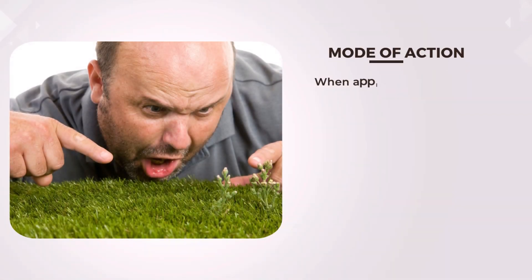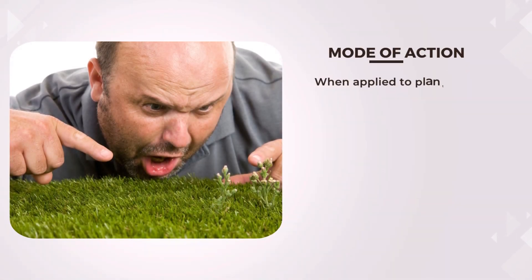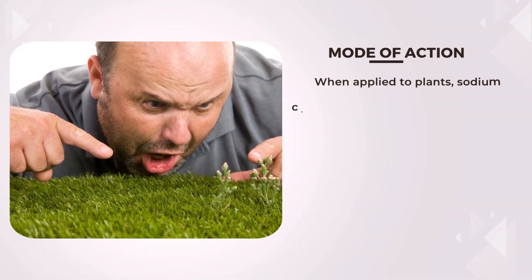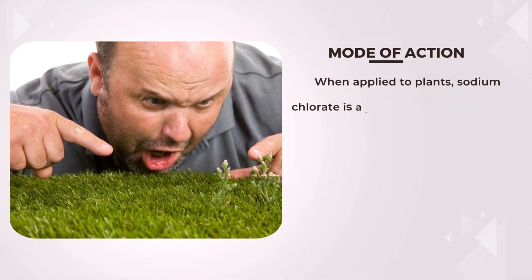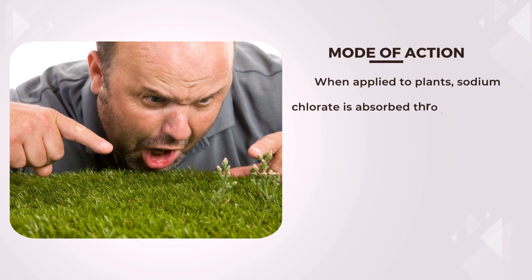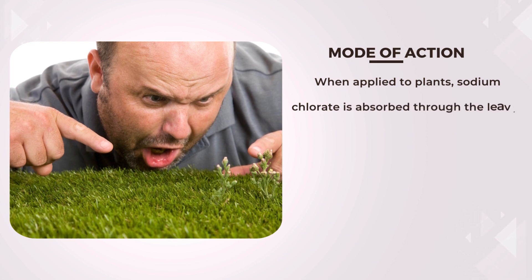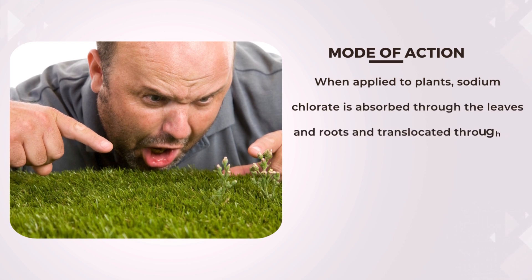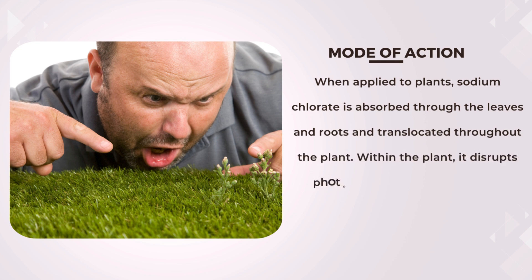Mode of action. Sodium chlorate acts as a non-selective herbicide, meaning it kills a wide range of plant species. When applied to plants, sodium chlorate is absorbed through the leaves and roots and translocated throughout the plant.